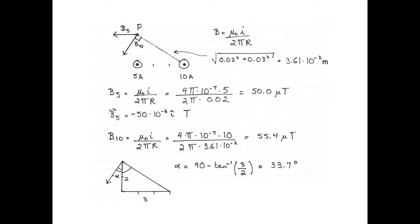The angle alpha is 90 degrees minus the inverse tan of 3 over 2, because the magnetic field has to be at 90 degrees to the radius. Alpha is 33.7 degrees. As a side note, that makes the direction of the magnetic field of the 10 Ampere wire at point P 270 degrees minus alpha, which is 236.4 degrees.